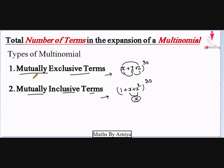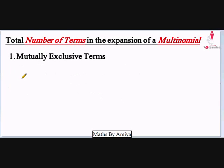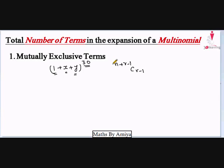We solve exclusive terms in a different way and inclusive in a different way. For mutually exclusive terms, we just distribute our power. If we have a multinomial 1 plus x plus y raised to power 30 and we have to find the total number of terms, we distribute power 30 in three different groups. The direct formula for this is n plus r minus 1 C r minus 1, where n is the total power and r is the number of terms. So for this it is 30 plus 3 minus 1 C 3 minus 1, which is 32 C 2.